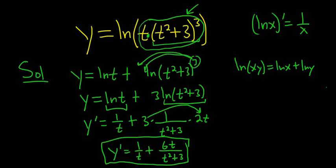Then we just take the derivative. The derivative of ln t is 1 over t, which is here. This derivative is 1 over this times the derivative of the inside, which is 2t. Then you multiply the 3 and the 2t and you get 6t. That's it.